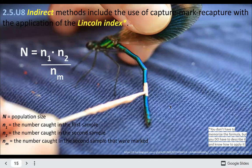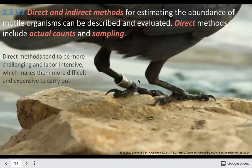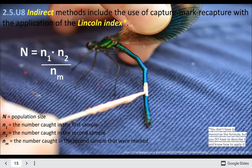Or you put a little band around their foot, as shown here. You let them go back into the environment, then capture a second sample and use the formula to find the population estimate. You don't have to memorize this formula, but you should know how it works, how to use it, how to apply it, and be able to describe the capture, marking, and recapture of those species.